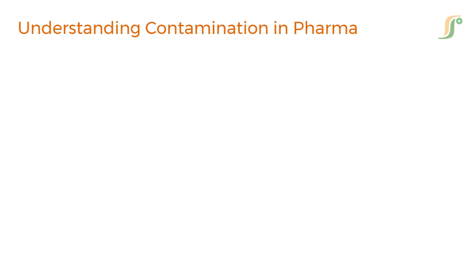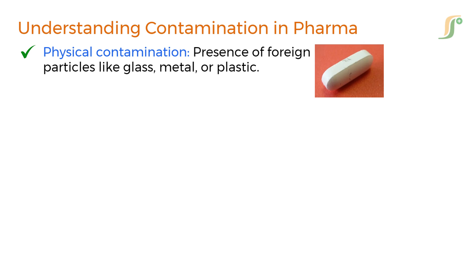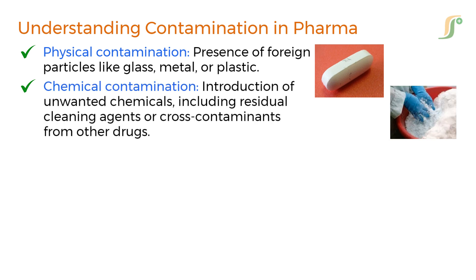Contamination is the unintended presence of an impurity or foreign substance in a drug product or manufacturing process. It can be broadly classified into four types. First is physical contamination, which includes the presence of foreign particles like glass, metal, or plastic. Second is chemical contamination, which includes the introduction of unwanted chemicals, including residual cleaning agents or cross-contaminants from other drugs.